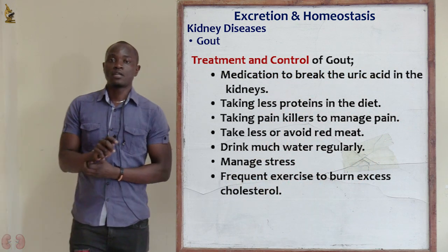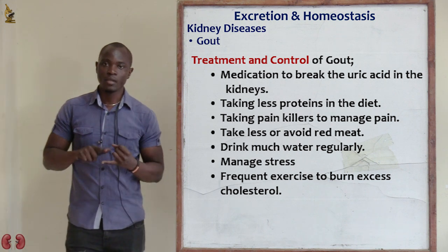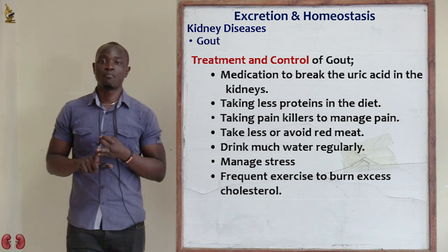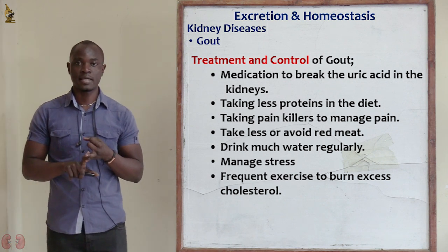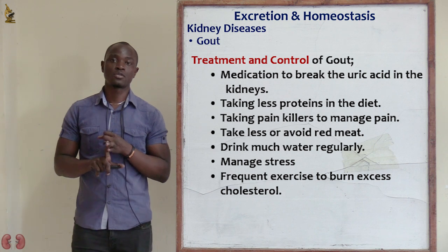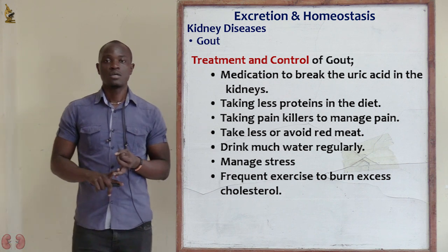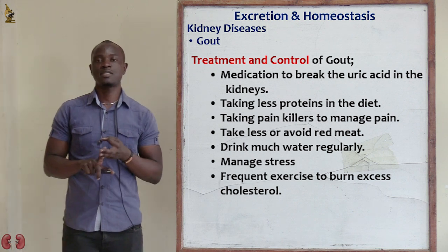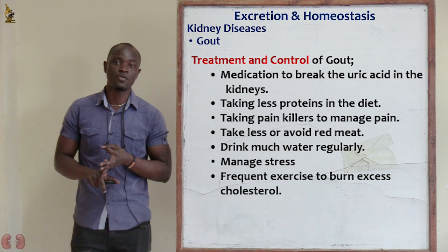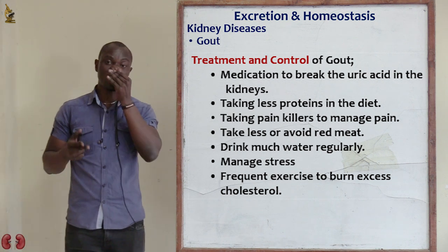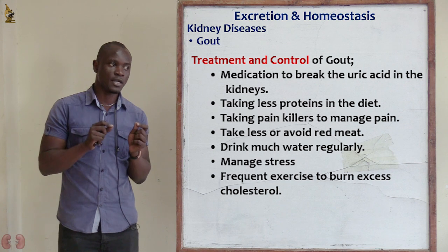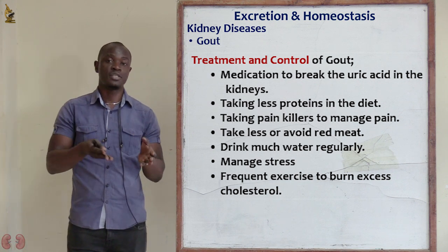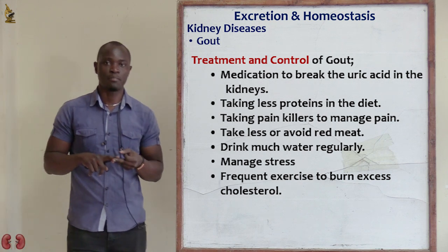Treatment and control of gout: avoid excess intake of alcohol, exercise in order to burn excess fat, excess carbohydrates, and excess proteins. Also take a lot of fluids. Early diagnosis to detect the problem is important, because if the disorder is detected early enough, it is easier for doctors to treat the disease.